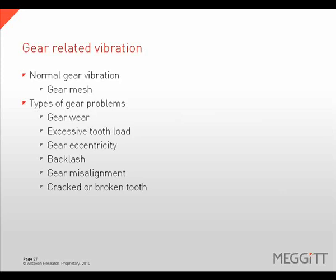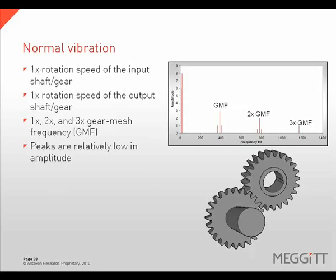Any gear set will generate a vibration response. Gear-related vibration can be normal, or it can be an indication of problems such as gear wear, gear misalignment, cracked or broken teeth, or other problems. It is normal for a gear set to generate vibration at its gear mesh frequency and harmonics — 1x, 2x, and 3x gear mesh frequency are all normal, but they should be at relatively low amplitudes.